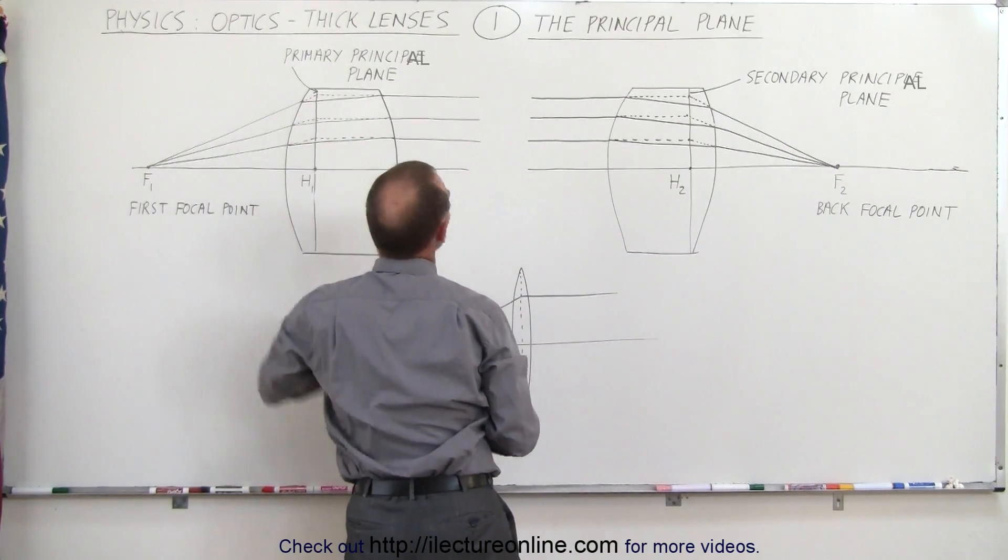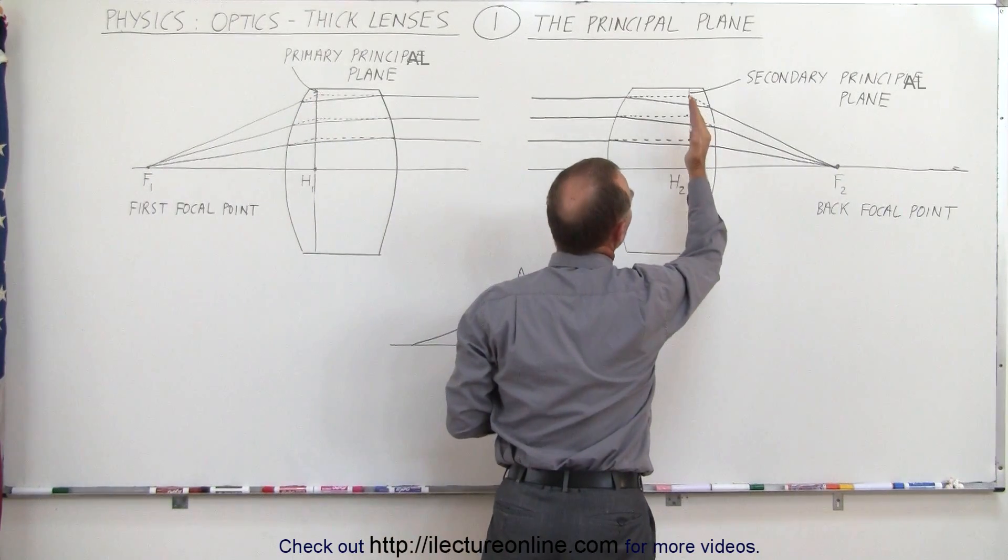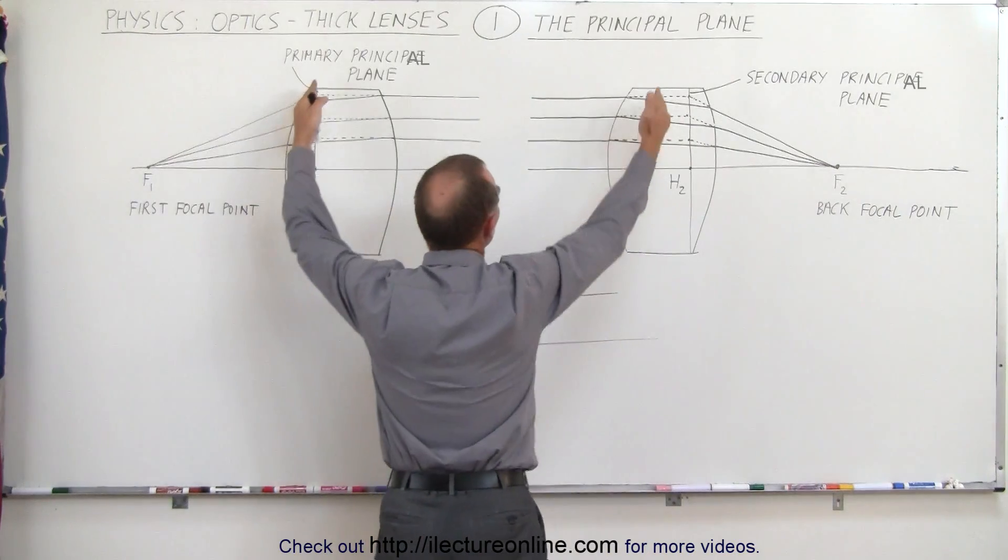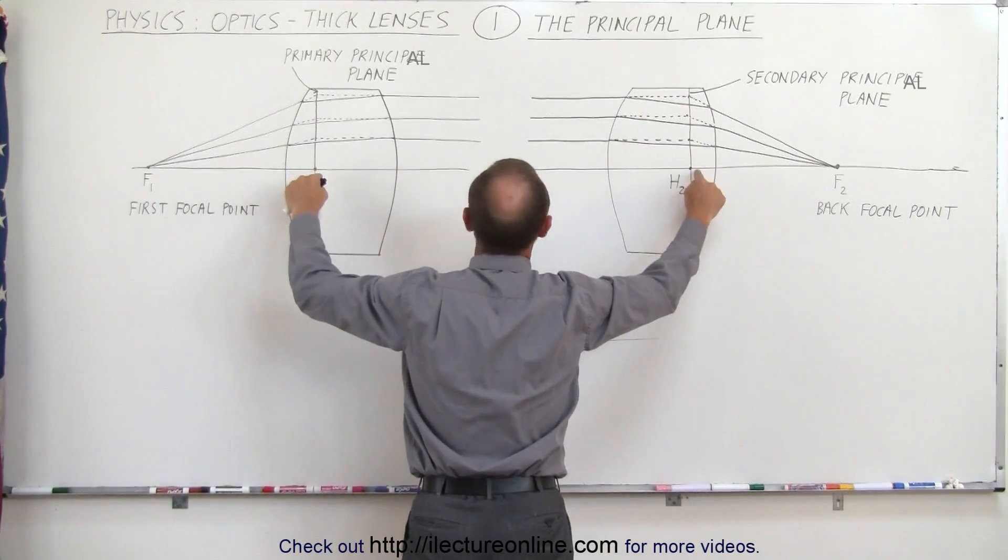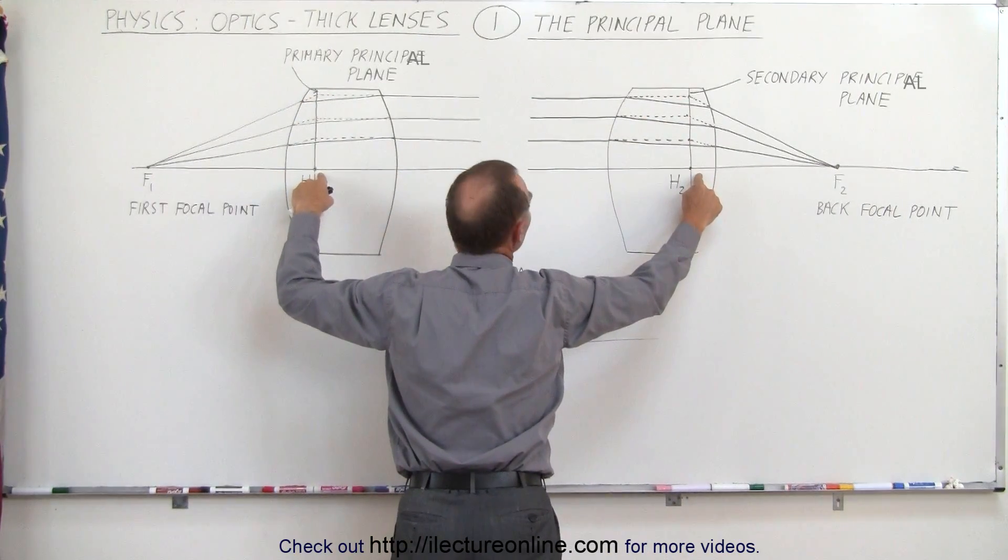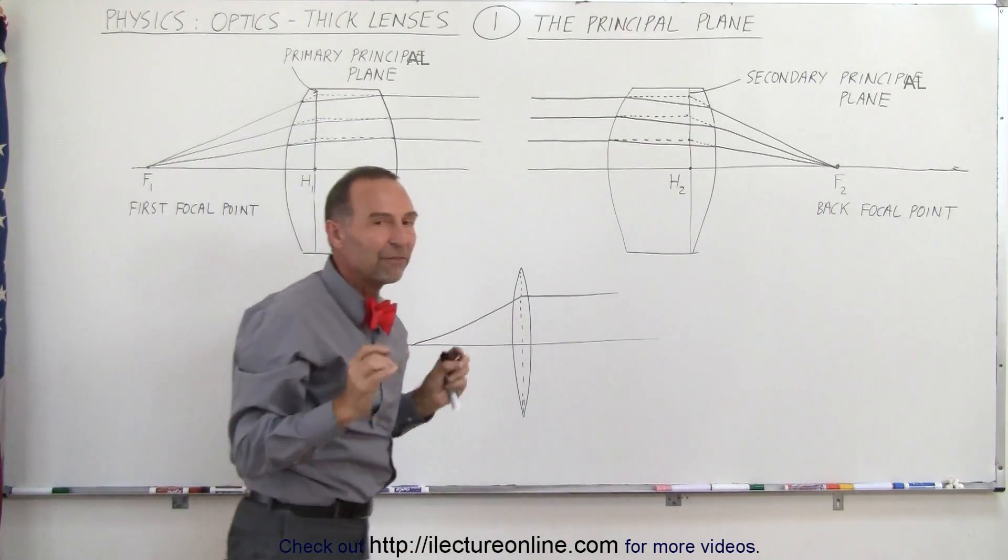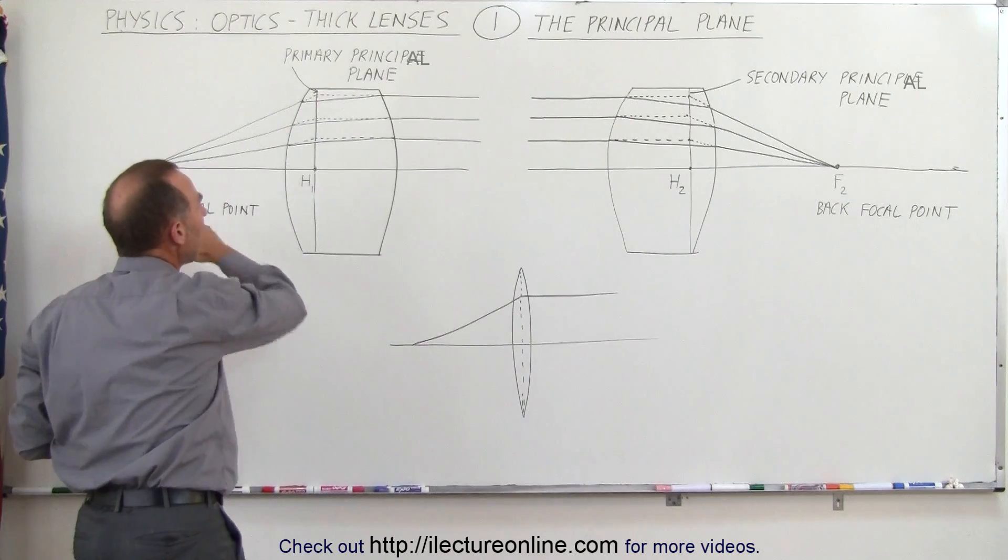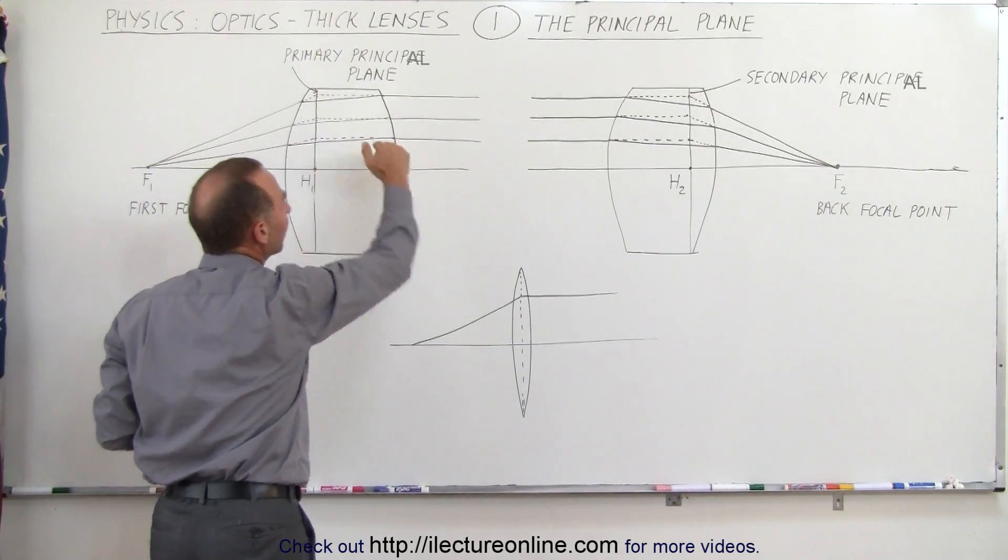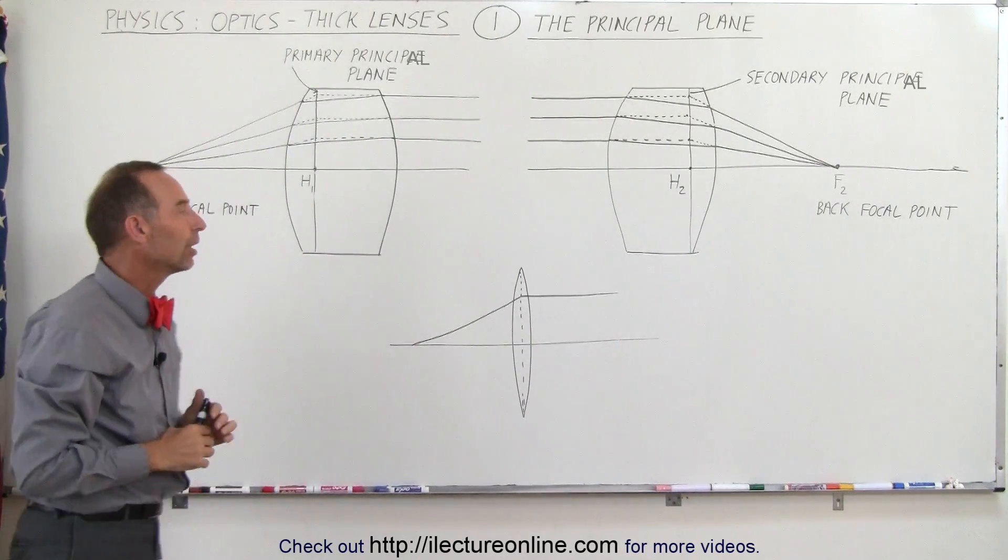So we have the primary or front principal plane, the secondary or the back principal plane, and where those planes cross over the optical axis, that's the front principal point and the back principal point. That indicates very specific points that will help us determine how to draw and how to calculate the path of the rays through the lenses.